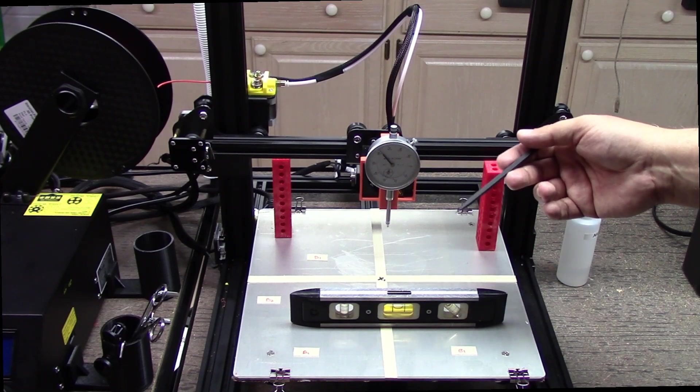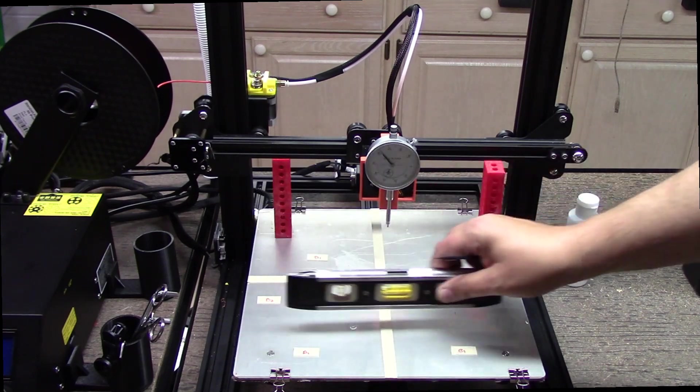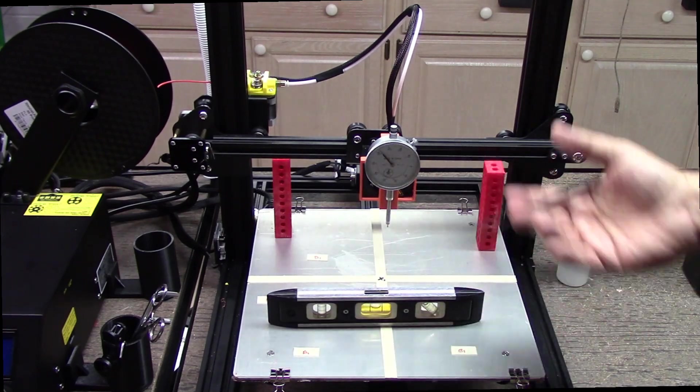You might be asking, Joe, what is tramming? You know, I'm used to this level thing. My wife tells me to go level a shelf. I take a level, I put it on the shelf and I say look hon, it's level, right?